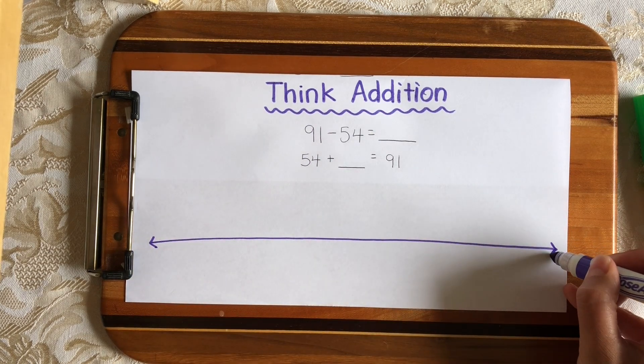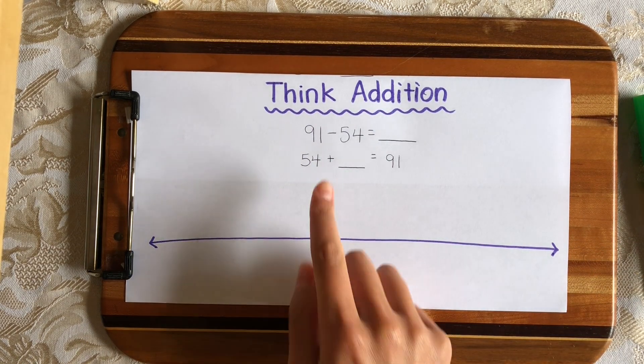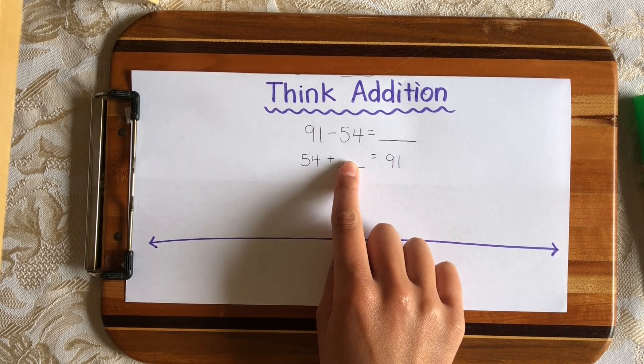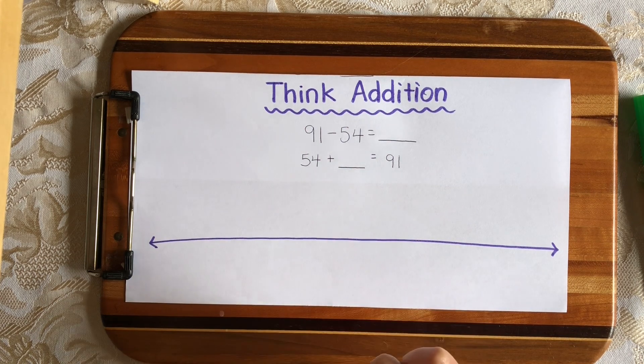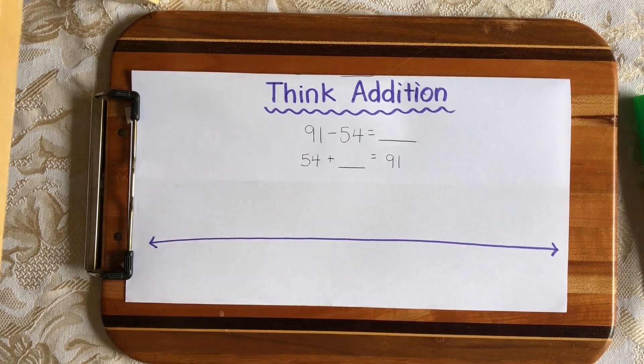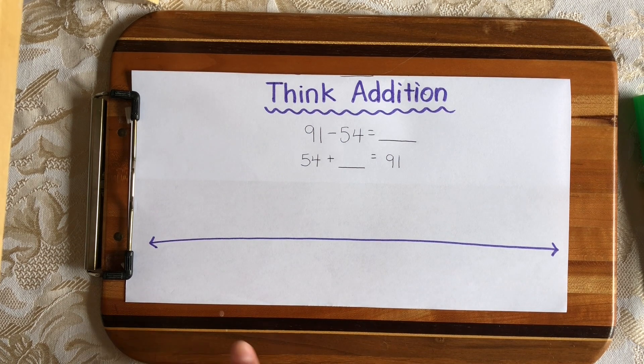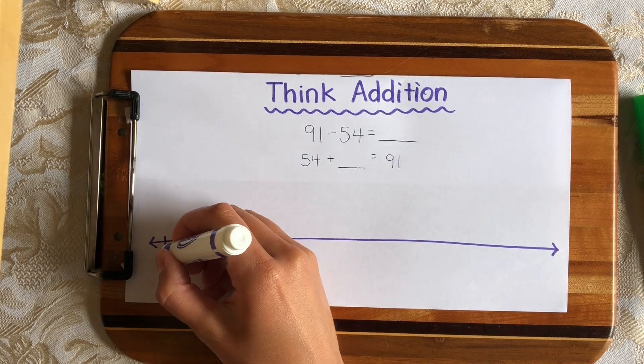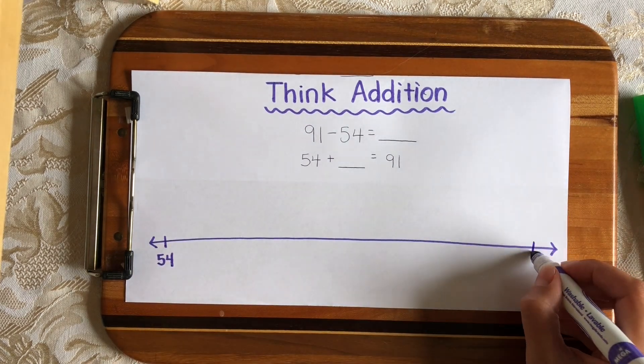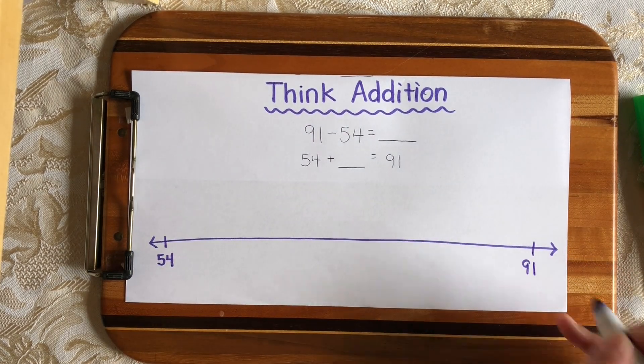So let's start off by drawing our number line. We're going to solve this problem on a number line. And I'm going to be solving this problem right here to figure out what I need to add on to 54 to get to 91. And that will also be the same as the difference between 91 and 54. So I'm going to start over here and place 54 because I need space to add a certain amount. And then I will stop when I get to 91.